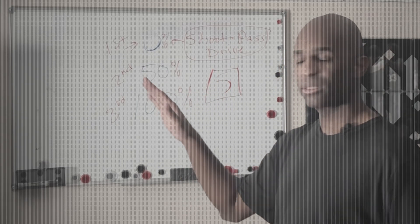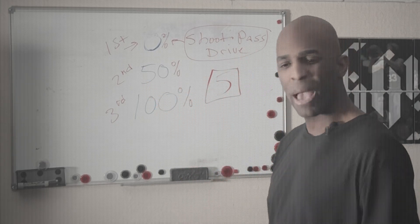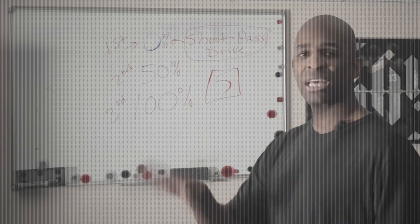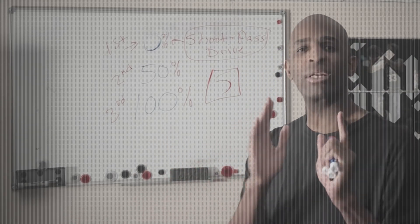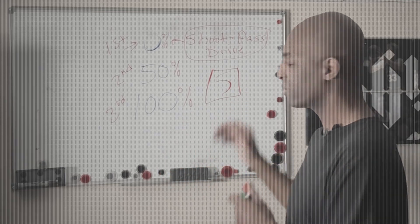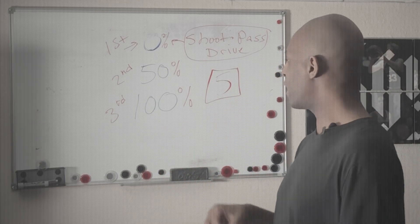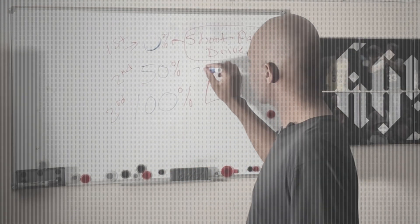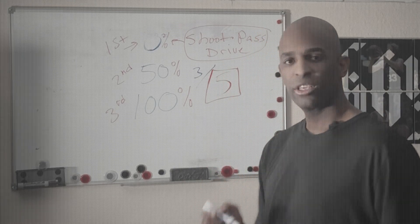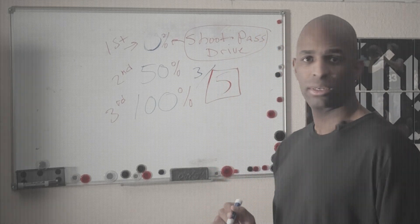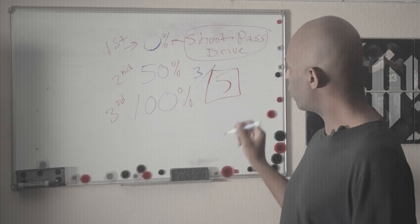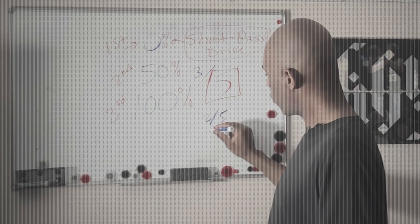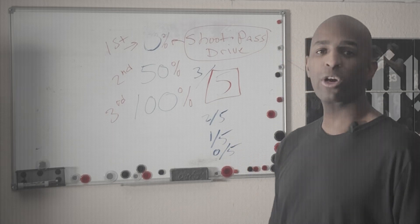You can shoot immediately, pass immediately if you happen to see someone, or just drive to the basket right away. No one is stopping you. You get five times. If you go three for five, you get five more. But if you go two for five, one for five, or zero for five, you are cut off.